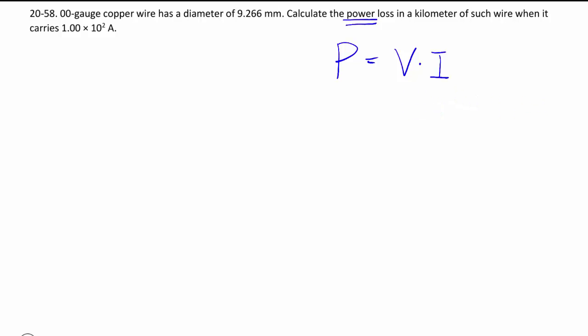We're fortunately given current in this case, which is exactly 100 amps, but we still need voltage. How do we get voltage? Well that's from Ohm's law: V equals I times R, but we don't have R, being the resistance.